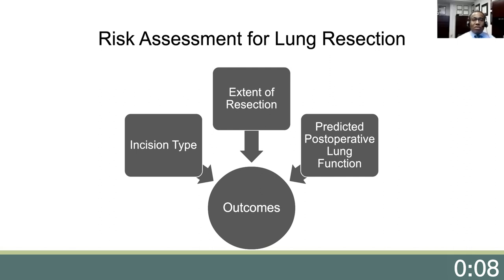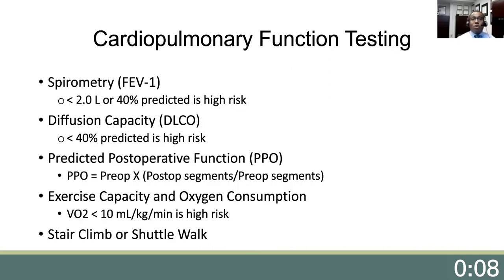which is an interaction between the extent of resection and the patient's pulmonary reserve. All three of these factors converge to determine the postoperative outcomes. Cardiopulmonary function testing is very essential to determining the risk of postoperative respiratory compromise in patients with marginal pulmonary function. Pulmonary function testing is essential. The two most important elements include spirometry, which measures the forced expiratory volume in one second, or FEV1. A value of two liters, or 40% of predicted, is considered high risk.